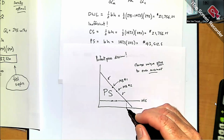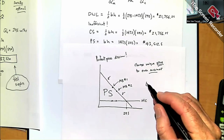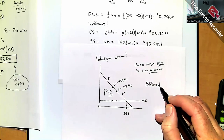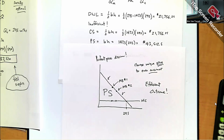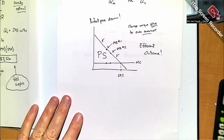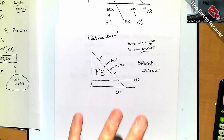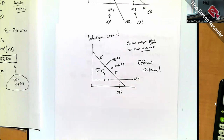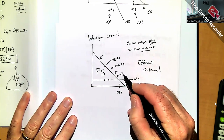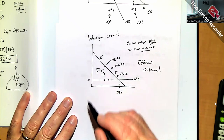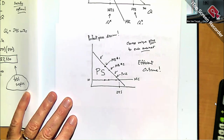Under perfect price discrimination, the monopolist continues down the demand curve charging every consumer a unique price equal to their marginal benefit, all the way out to 295 units. The entire triangle becomes producer surplus, and you actually get an efficient outcome — production reaches the competitive quantity. It's counterintuitive, but if the monopolist can pull off perfect price discrimination, efficiency is restored.